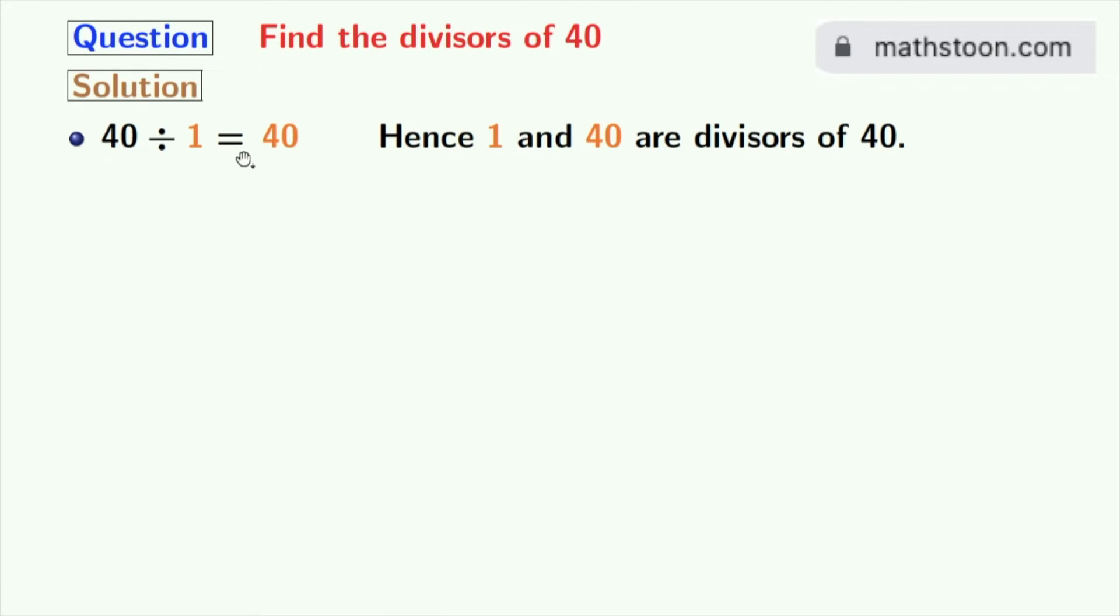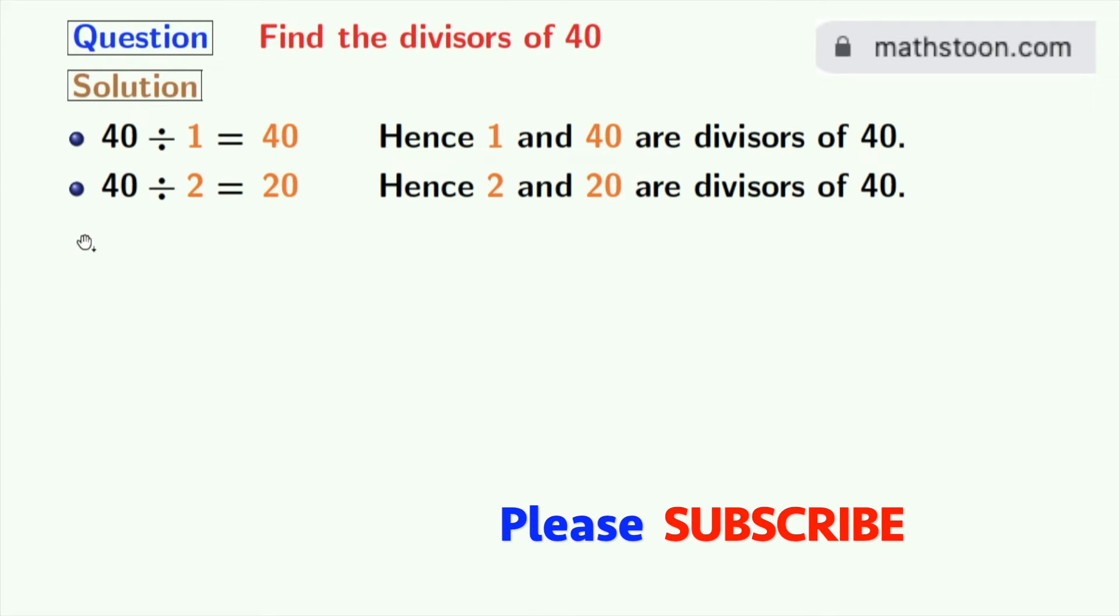Now if we divide 40 by 2, we get 20. Hence 2 and 20 are the divisors of 40. Next number 3 does not divide 40.